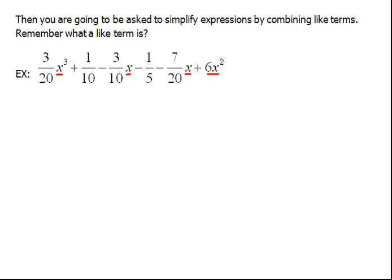Like terms are things that have the exact same variable with them. So we can only combine x cubes with other x cubes. There are no other x cubes in here. So 3/20ths x cubed is our only term there. Now I'm going to mark it out just so that I know that I've already used it and I don't get confused in trying to put it together with something else.